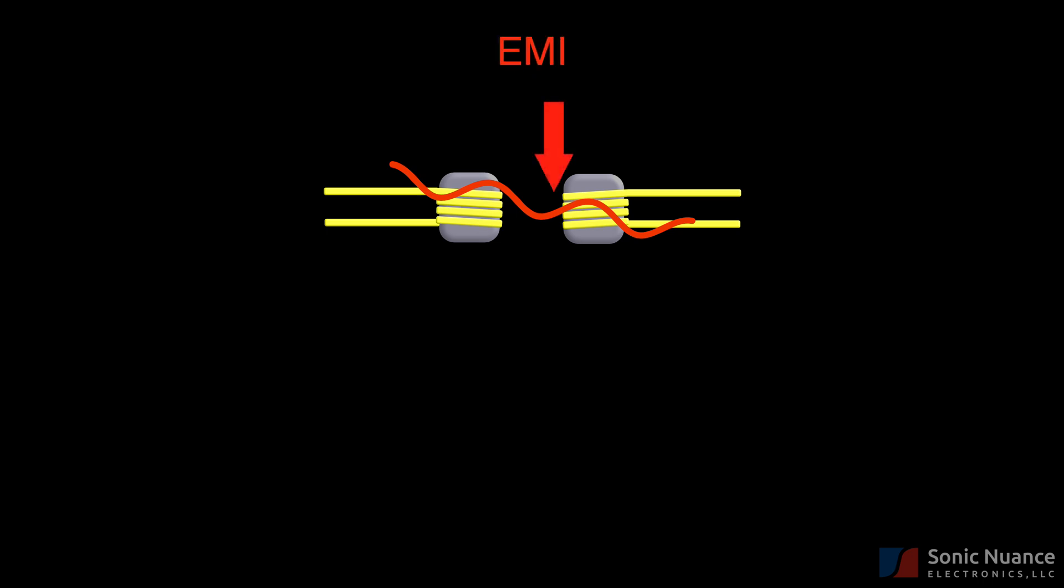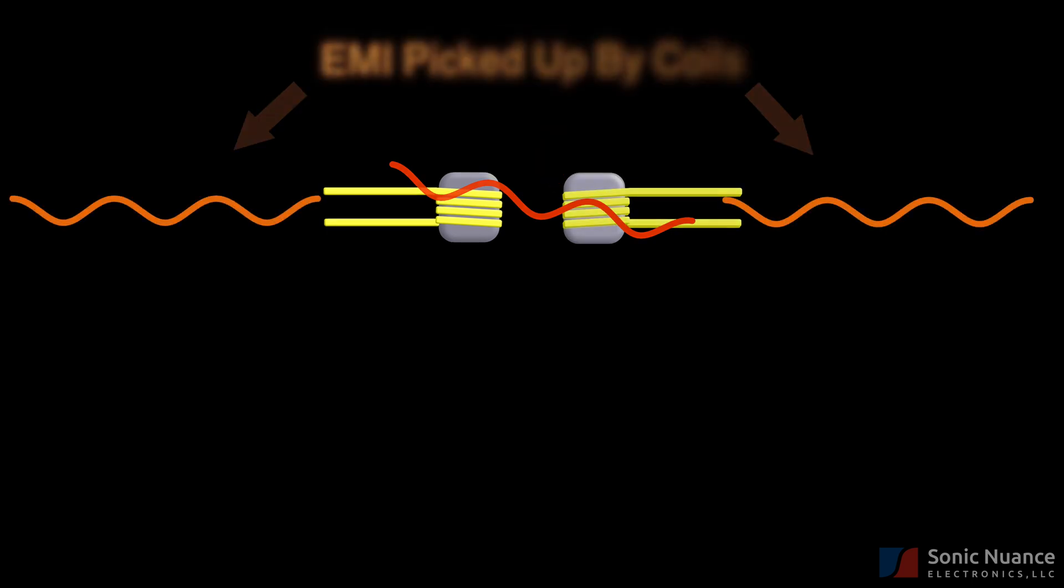Though you can't see it, the air is filled with EMI, from FM radio waves to cell phone signals to power supply noise, lighting noise, etc. Some of these signals are picked up by the pickup's coils, which are acting like an inadvertent antenna.